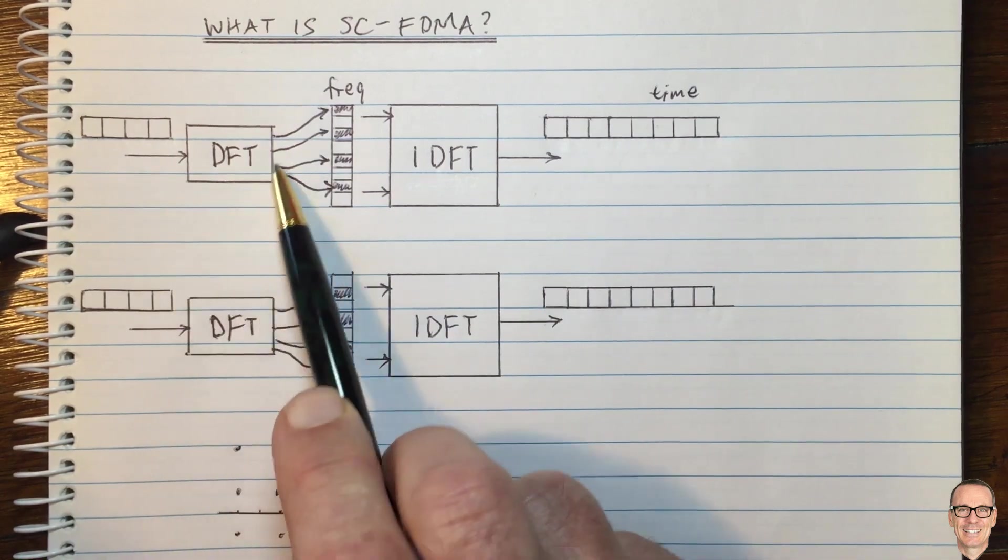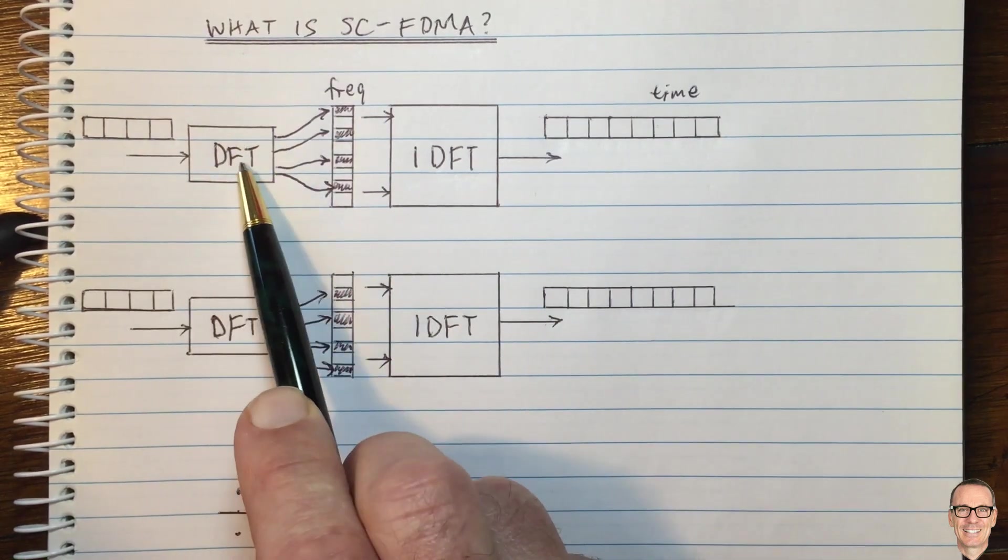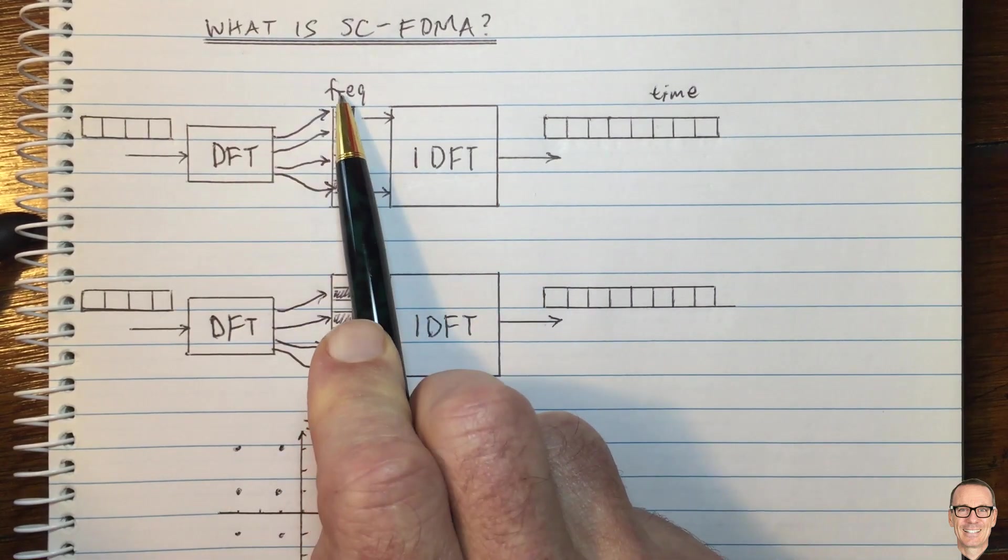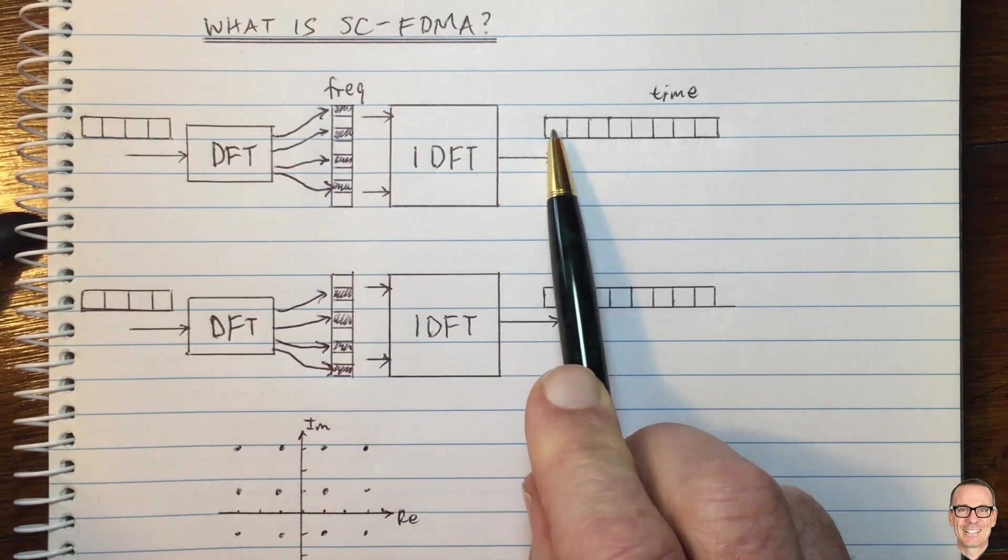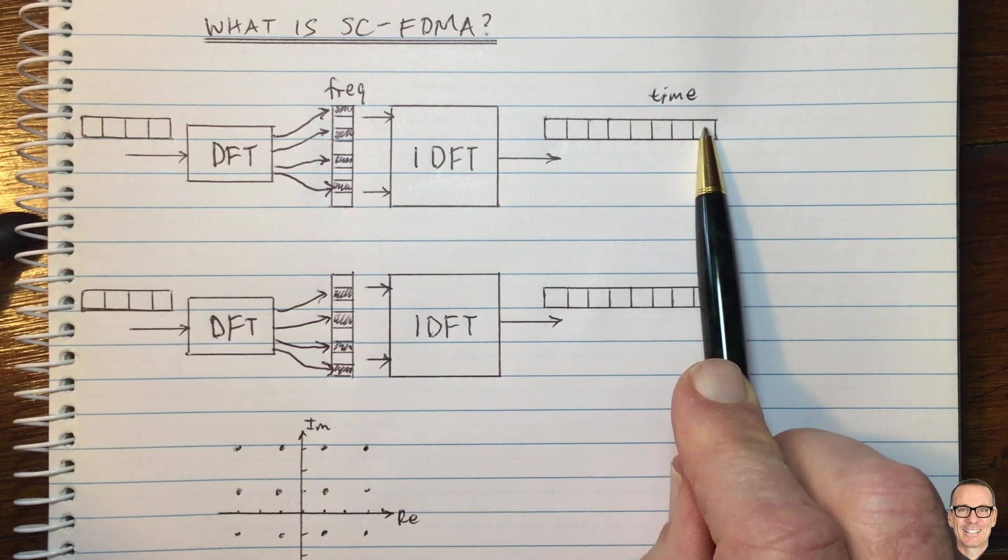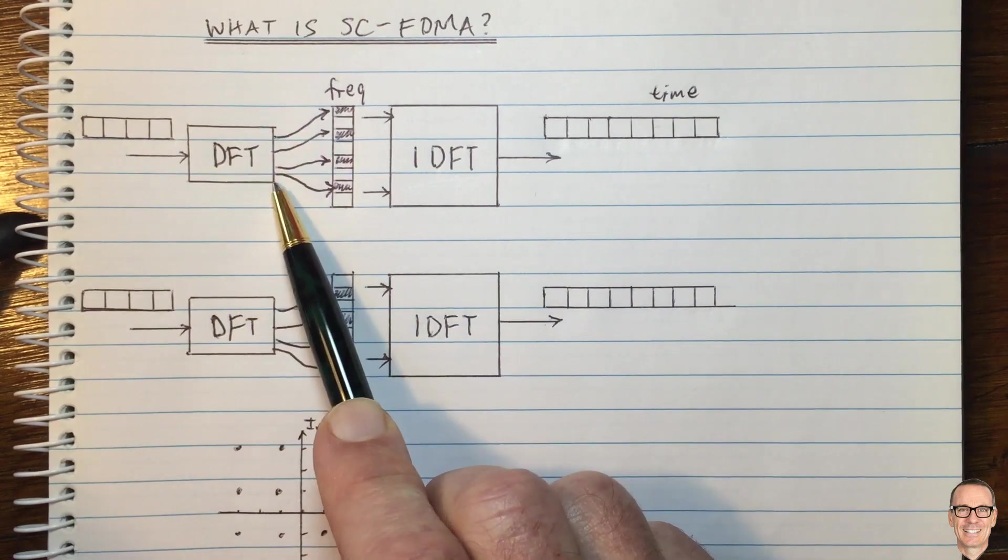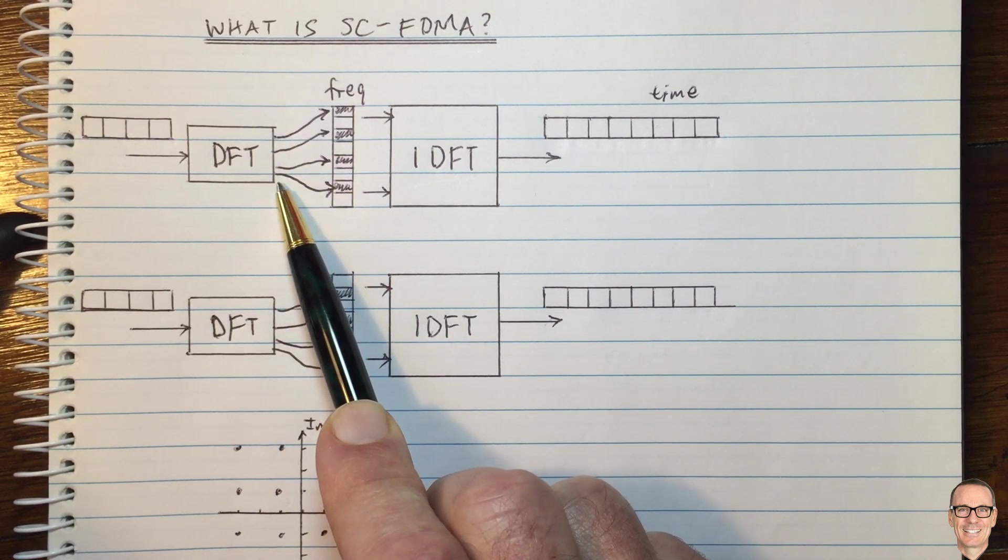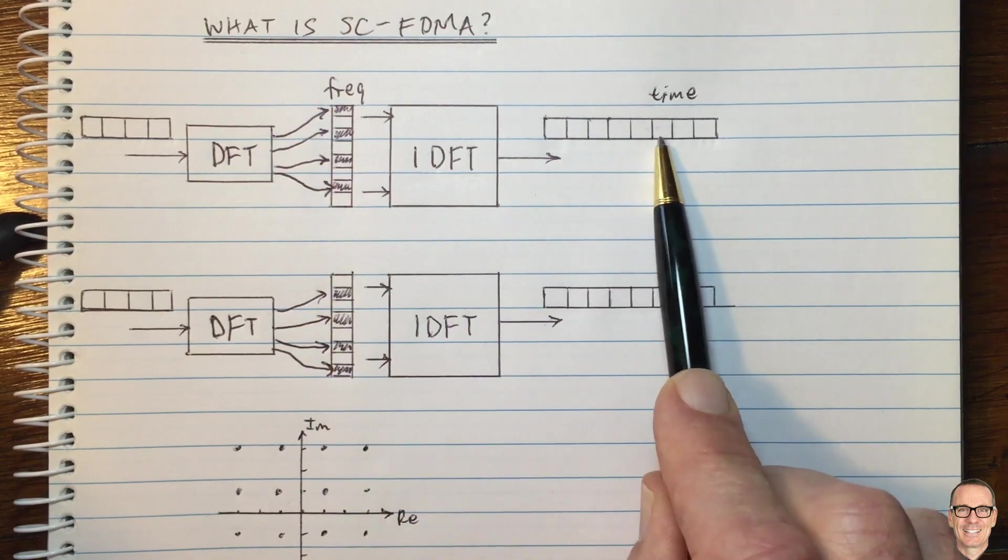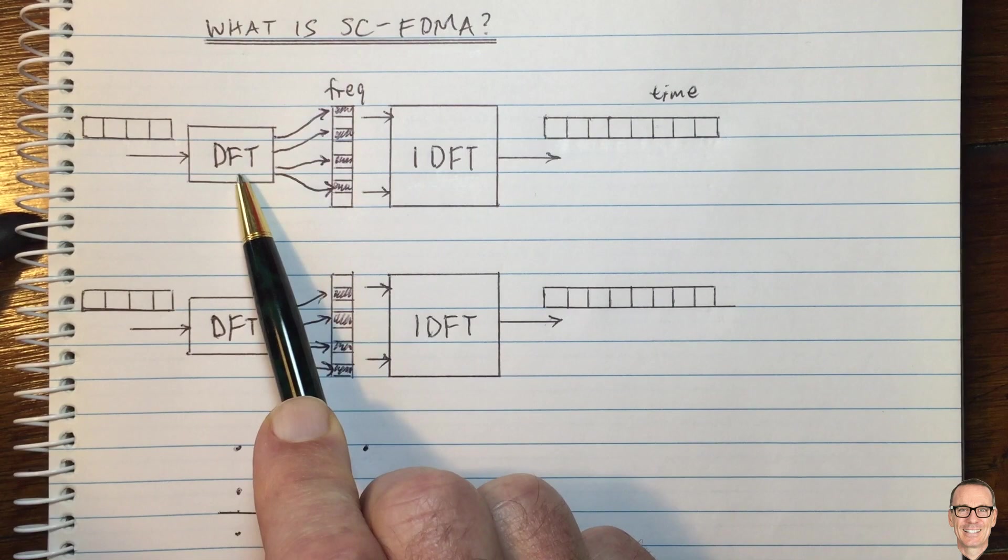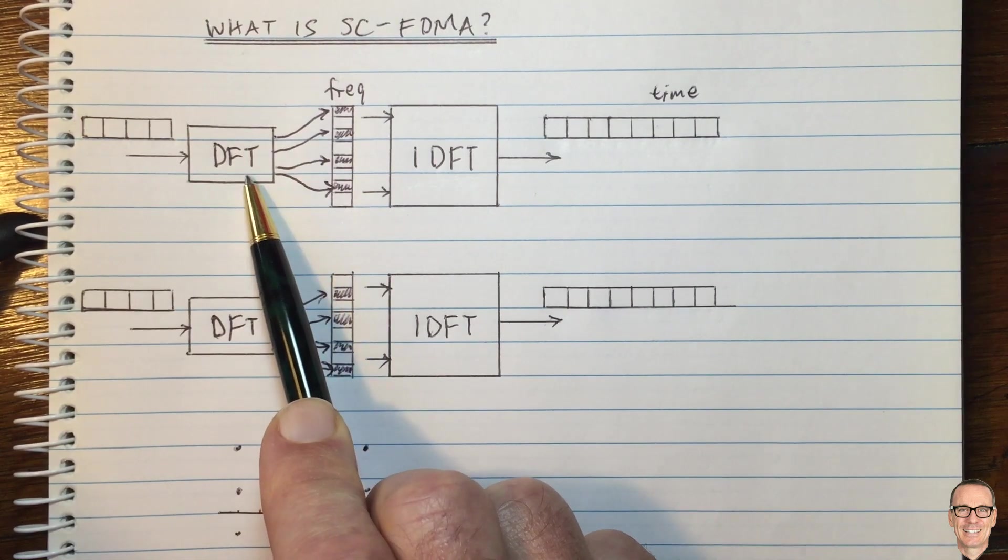So this approach of pre-filtering with a DFT achieves both the desired effects of being able to equalize in the frequency domain and have a time sequence with a bounded peak to average ratio. And this linear pre-coding process is much less computationally intensive than the other peak to average ratio reduction techniques I talked about before. So this is ideally suited to being done in the handset on the uplink.